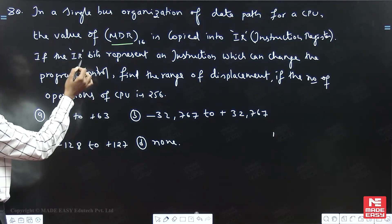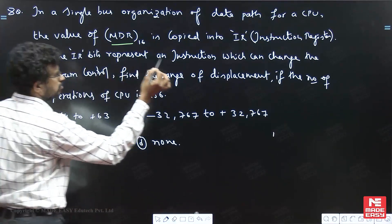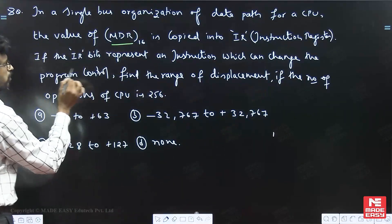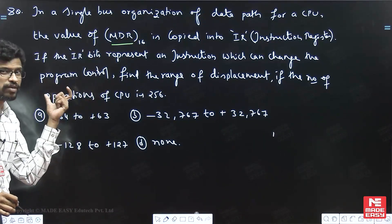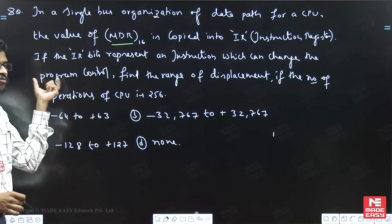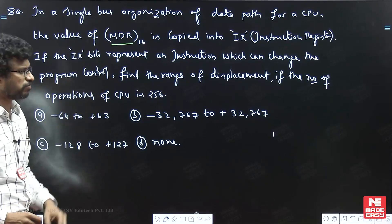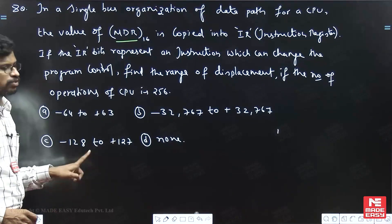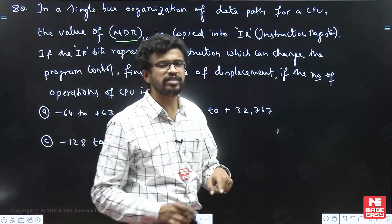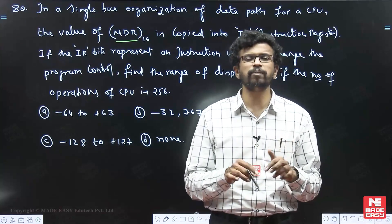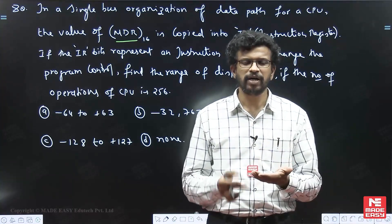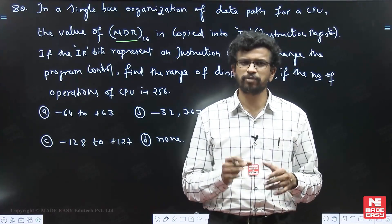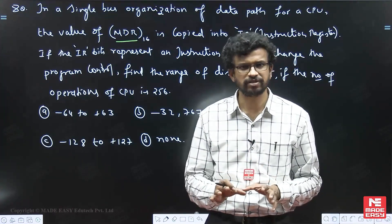If the IR bits represent an instruction — meaning the opcode of an instruction — which can change the program control, then there are two types of instructions: one is sequential flow and the other is control transfer. If the program control is changed, it means this instruction belongs to some branch instruction like jump, call, return, etc. Branch instruction means it changes program control — these are jump instructions.